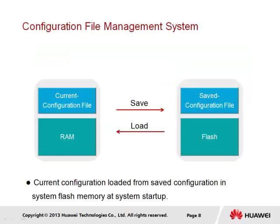Configuration files represent a list of stored configuration commands and parameter settings that are applied to the device's operation. These are generally stored within the flash memory of a device and loaded into RAM during the boot process. Changes to the configuration are stored in a current configuration file that, when saved, will be copied to the saved configuration file. This saved configuration file will only be created once the configuration is saved; otherwise, a default configuration is used that applies the default system parameters.